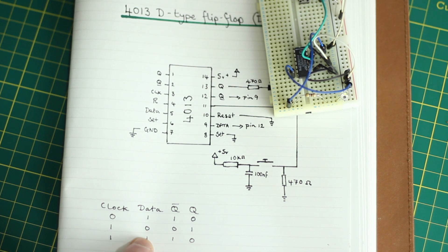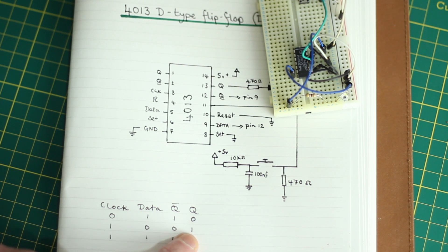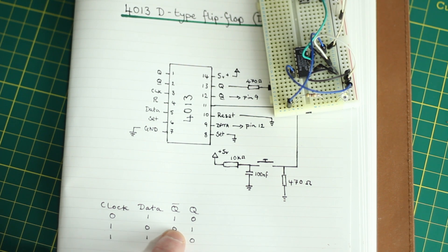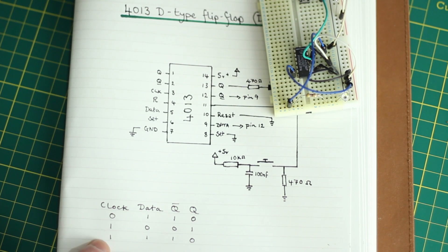And because they have to be opposite, and this happens in like a very small amount of time, microseconds or nanoseconds probably, Q2 goes low and so does data. So that's its standard operating procedure.